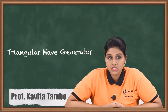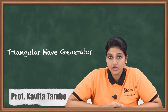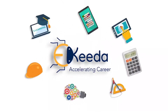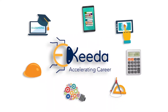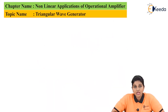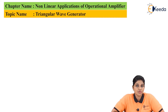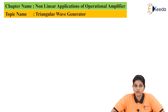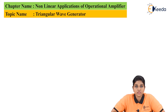Hello friends. In this video we are going to see how the triangular wave is generated by using op-amp. We know that operational amplifier is used to perform various operations which includes addition, subtraction, multiplication, and division — that's why it is named as operational amplifier. In addition to this, operational amplifier is also used to produce various waveforms which includes square wave, sawtooth wave, and triangular wave.